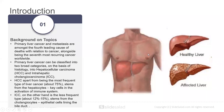Primary liver cancer and metastasis are amongst the fourth leading causes of death related to cancer, and are the seventh most occurring cancer worldwide. Primary liver cancer is classified into two categories on the basis of histology: hepatocellular carcinoma (HCC) and intrahepatic cholangiocarcinoma (ICC). HCC is the most frequent type and originates in hepatocytes, which are key to immune system activation. ICC is a lesser known and less frequent form, occurring about 12 to 15% of the time, and stems from cholangiocytes, which are the epithelial cells lining the bile duct.